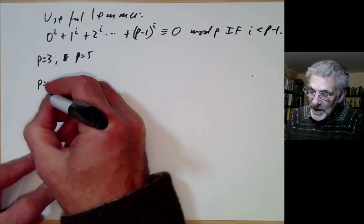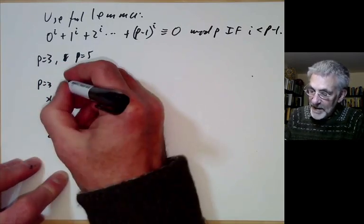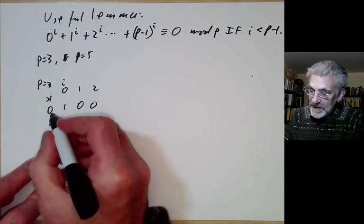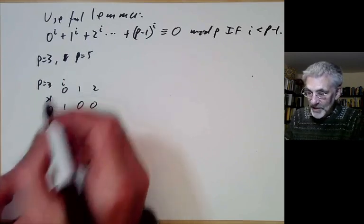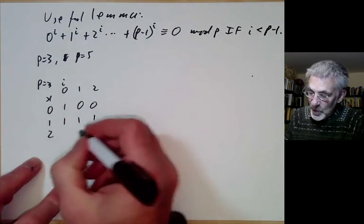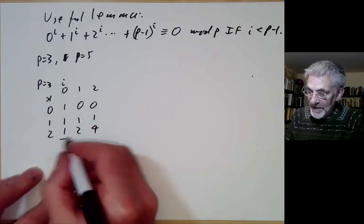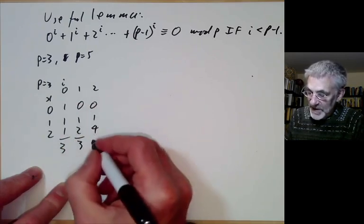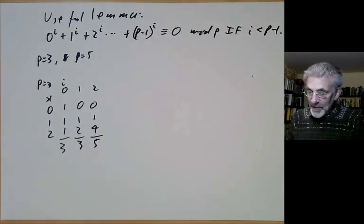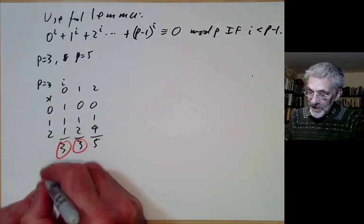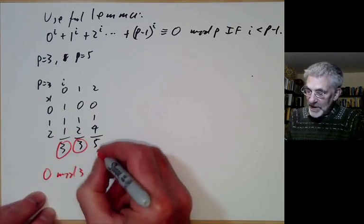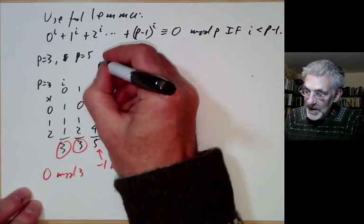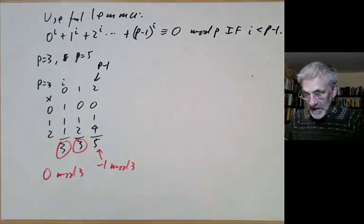Let's try p=3 and p=5. For p=3 we have x can be 0, 1 or 2 and i can be 0, 1 or 2. We notice that 0^0 is 1 by convention. The other powers of 0 are 0 and powers of 1 are 1, and here we have the powers of 2: 1, 2 and 4. Now we add these up. The sum of the 0 powers is 3, the sum of the first powers is 3, and the sum of the squares is 5. We notice that these two numbers here are 0 mod 3 and this number is not. It's -1 mod 3 and this is where i equals p-1. So it definitely does fail if i equals p-1.